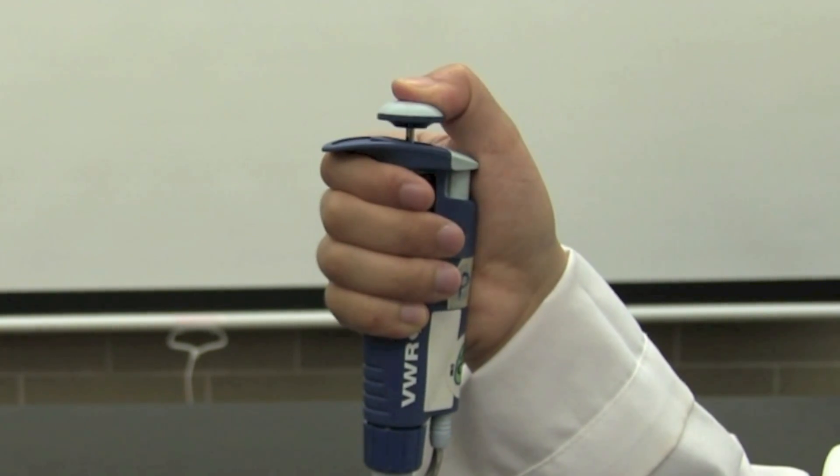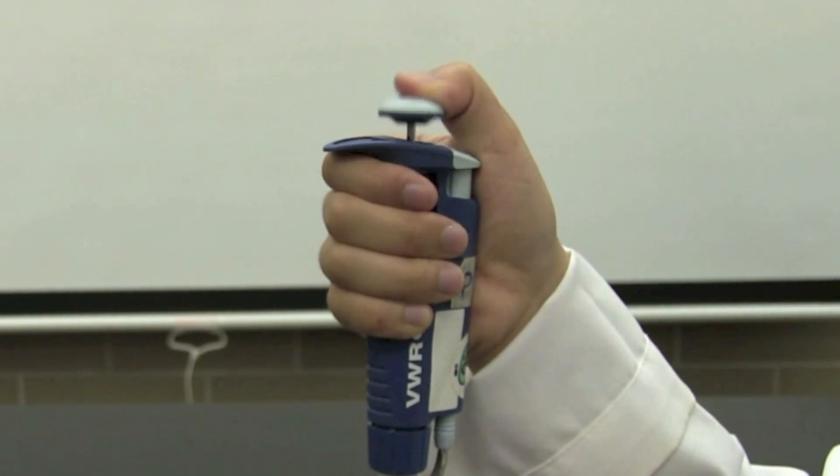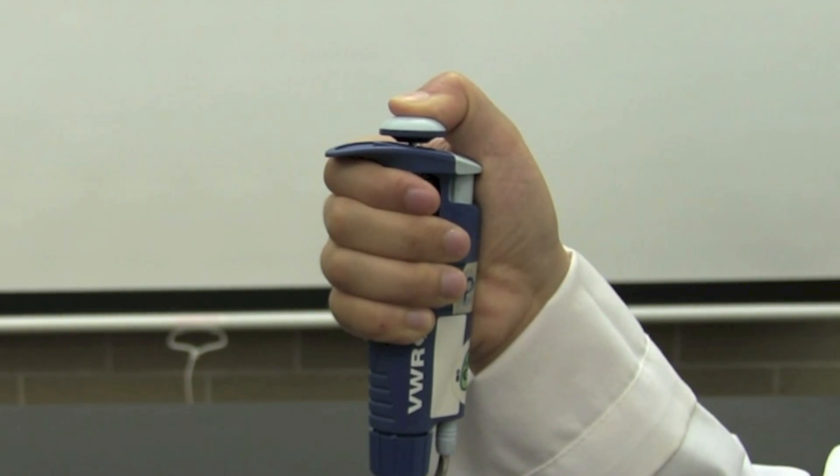Lastly, push the plunger button. You will notice that there are two stops. The first stop releases the volume that you have calibrated. The second stop is only used to expel leftover fluid stuck in the tip.